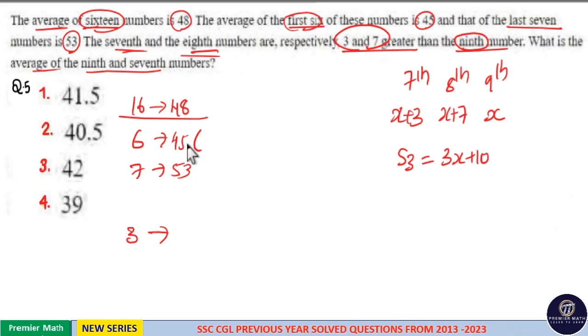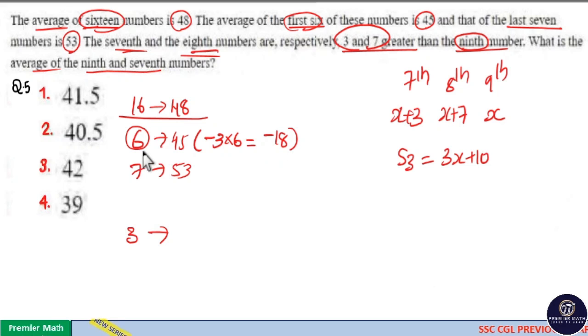Average of 6 numbers is 45. This 45 is 3 less than 48. So this 3 decrement in average is for this 6 numbers. So 3 into 6, total sum decrement is equal to 3 into 6, 18. So 18 decrement in the sum of this 6 numbers.